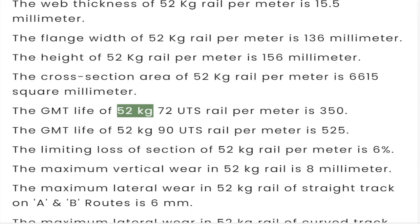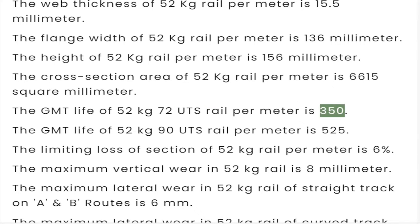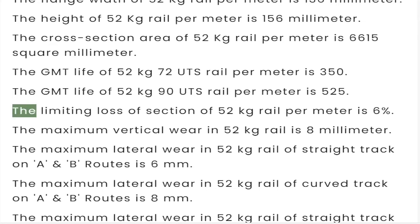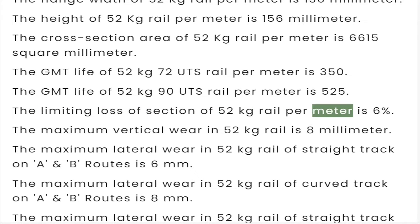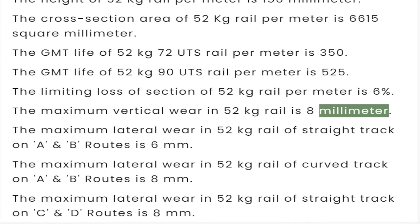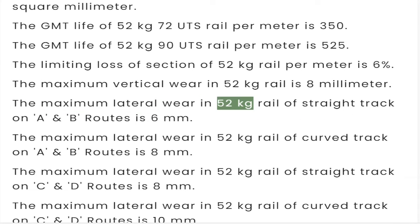The GMT life of 52 kg 72 UTS rail per meter is 350. The GMT life of 52 kg 90 UTS rail per meter is 525. The limiting loss of section of 52 kg rail per meter is 6%. The maximum vertical wear in 52 kg rail is 8 mm.